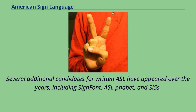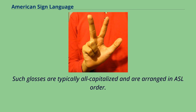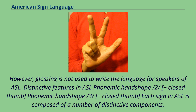Several additional candidates for written ASL have appeared over the years, including SignFont, AS alphabet, and C5S. For English-speaking audiences, ASL is often glossed using English words, typically all capitalized and arranged in ASL order. For example, the ASL sentence 'DOG NOW CHASE(9=3) CAT,' meaning 'the dog is chasing the cat,' uses 'now' to mark ASL progressive aspect and shows ASL verbal inflection for the third person. Each sign in ASL is composed of a number of distinctive components, generally referred to as parameters.